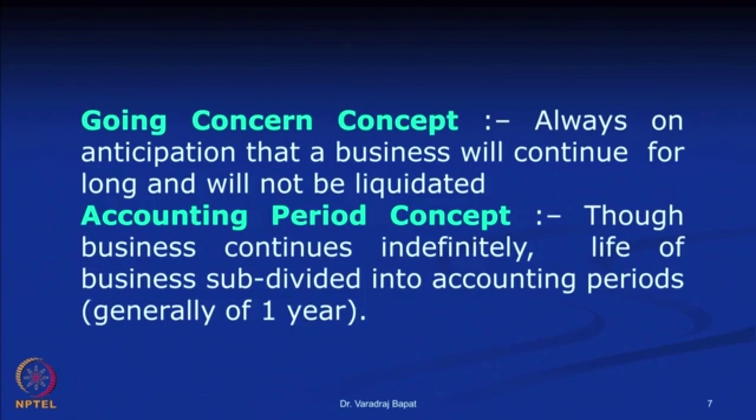The next one is the accounting period concept. The business is a continuous process — transactions keep on happening. But in accounting, the whole of business life is divided into certain periods known as accounting periods. Normally there is a one-year accounting period; within one year you can have a quarter or a month. In India, are you aware of the accounting period? It is normally from 1st April to 31st March. At the end of every 31st March, the profit and loss, balance sheet, cash flow, and all other statements are prepared, books are considered closed, and new books are opened from 1st April of the next financial year.